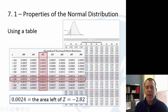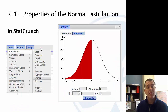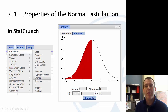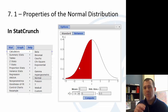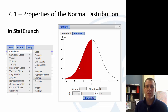StatCrunch makes this much easier — under the Calculator menu, select Normal, and you can compute areas directly. You can find left-tail areas or areas between two values, similar to how we entered information for the binomial distribution. We'll do more examples in the next section when we move beyond the standard normal (z) to other random variables and their distributions.